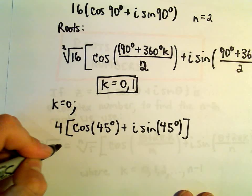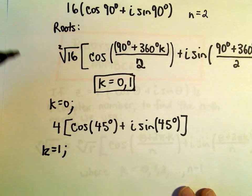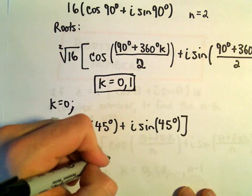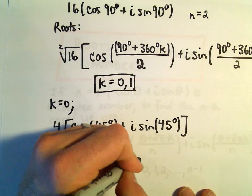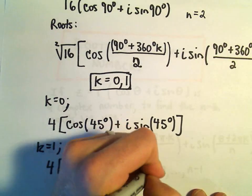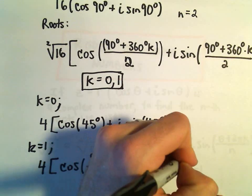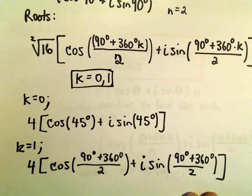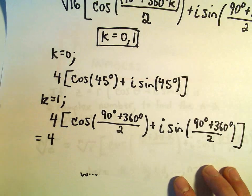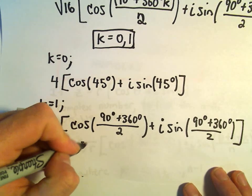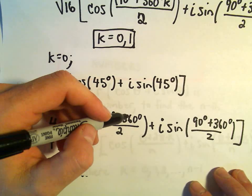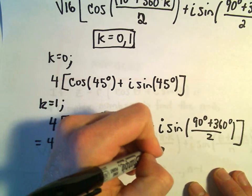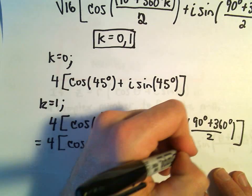We'll also have to calculate it when we plug in k equals 1. So when we do k equals 1, again, we'll get the square root of 16, which is 4. Then we'll have cosine of, well, 90 degrees plus 360 degrees all over 2, plus i sine of 90 degrees plus 360 degrees all over 2. And we can simplify this down a little bit further. This would be 4 times cosine of, let's see, so 90 degrees and 360, that would be 450, over 2 would be 225 degrees, plus i sine of, again, 225 degrees.